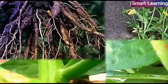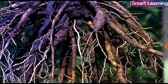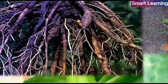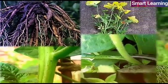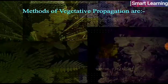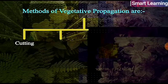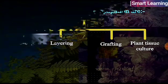There are many plants whose parts such as root, stem, and leaves develop into new plants under appropriate conditions. Methods of vegetative propagation include cutting, layering, grafting, and plant tissue culture.